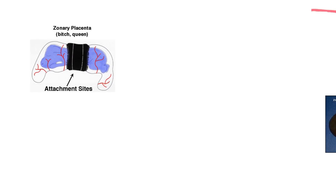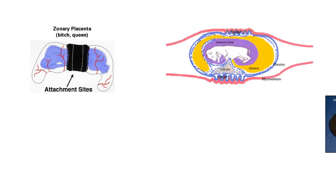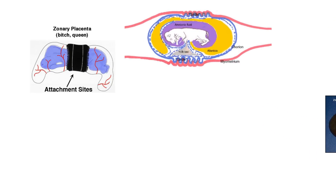Here's a diagram of the zonary placenta. I'm a visual person — the more things I can see, the better I understand. The female dog is called the bitch, the female cat is called the queen — some terms you may not have heard before. There's the zone that's the attachment, and in this drawing they show a fetus. You should know: one fetus per one placenta.